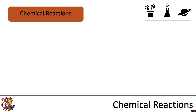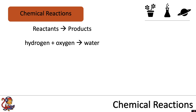We can write chemical reactions as a word equation. Anything that we react together, we call the reactants, and we put those on the left-hand side. We then follow these by an arrow and write the products on the right-hand side. Products are things that are made in the reaction. For example, we could react hydrogen and oxygen together to make water — hydrogen and oxygen are the reactants in the reaction.